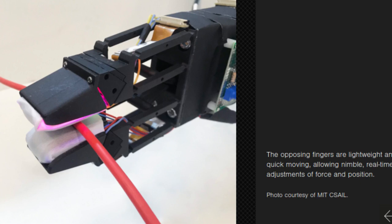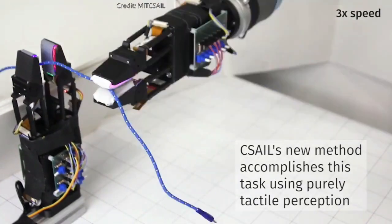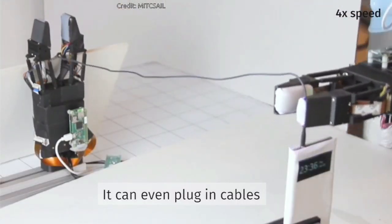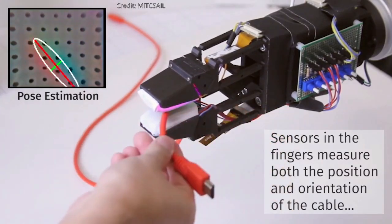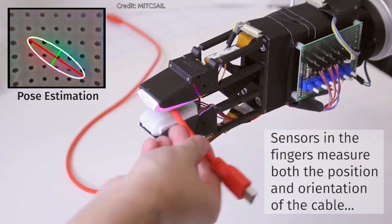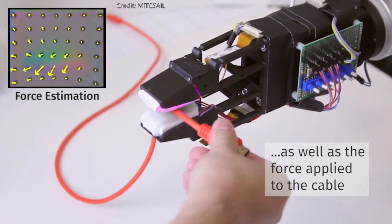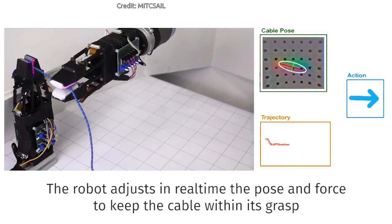The team's new system uses a pair of soft robotic grippers with high-resolution tactile sensors to successfully manipulate freely moving cables. One could imagine using a system like this for both industrial and household tasks, to one day enable robots to help us with things like tying knots, wire shaping, or even surgical suturing.